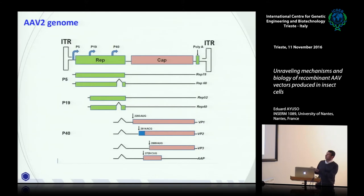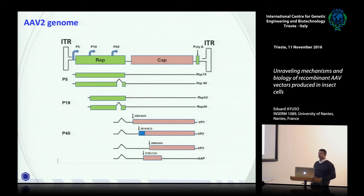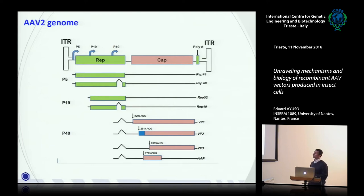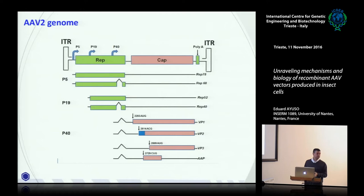VP1 is expressed from a strong ATG start codon, VP2 from a weaker ACG codon, and VP3 again from ATG. Later, around 2010, it was discovered that additional proteins are expressed in this genome beyond REP and CAP. One is the AAP protein — the assembly activating protein — which is encoded inside the capsid gene sequence but in a different open reading frame. This will be important throughout my talk.